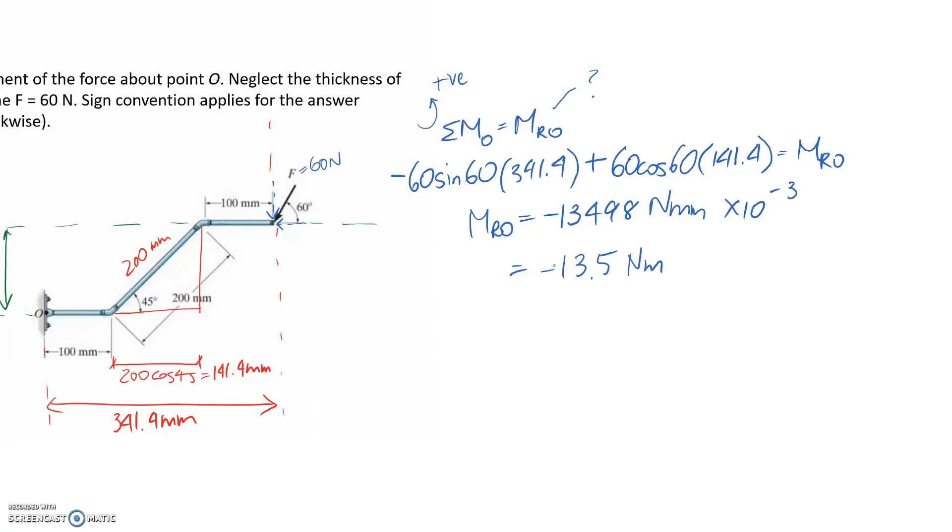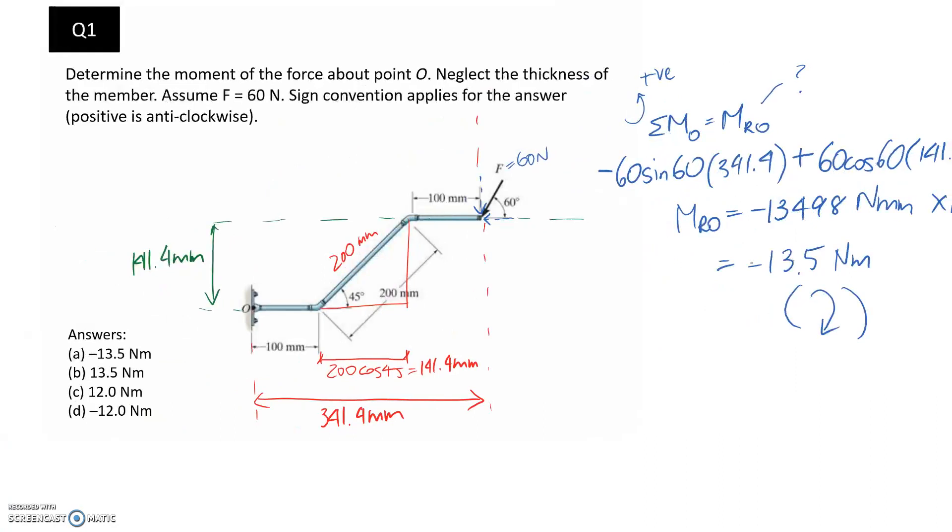Also, we've got a negative. This is aligning with our sign convention. It means it's in the negative direction, which is clockwise. But that's not to worry, because we just need to take this over here, which is already in the sign convention stuff, and it just means that A is going to be the answer. So that's all there is there.